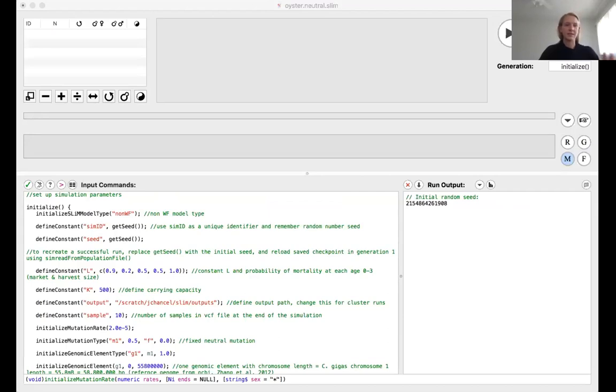So this is what the SLIM GUI looks like. You put all of your code into this section, and here is where you would put in your specific parameters to your model. So you have your carrying capacity, your mutation rate, your genomic elements. In this case, one genomic element that's the length of the entire first chromosome of the Pacific oyster. Once this is all coded out, you can click play and see what's actually going on in this chromosome. Along this line, we can see different mutations arising within the chromosome, and the height of these are the frequency at which these mutations are in the genome. So that's just a little example of what that looks like.